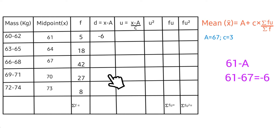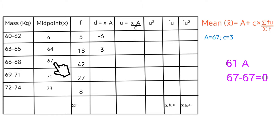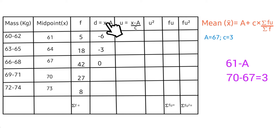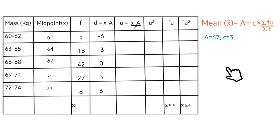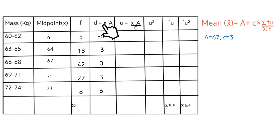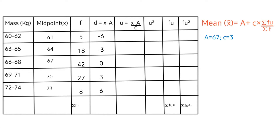Next is 64 minus a, with a being 67. Then 67 minus 67, 70 minus 67, and lastly 73 minus 67 gives 6. Now proceed to the u column. u is defined as (x minus a) divided by c — the value we just calculated, divided by c where the class interval c is 3.